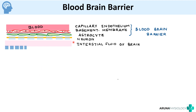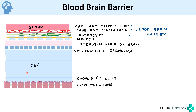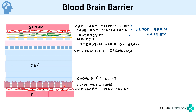For the blood-CSF barrier: the ventricular ependymal cells line the lateral ventricle, and CSF is present inside. CSF is produced by the choroid cells. The choroid epithelium has tight junctions, and there is also a basement membrane and capillary endothelial cells — this forms the blood-CSF barrier. In broader terms, both blood-brain barrier and blood-CSF barrier fall under the heading 'blood-brain barrier,' but we usually focus on the parenchymal barrier. Remember: two barriers — one between blood and brain parenchyma, one between blood and CSF.